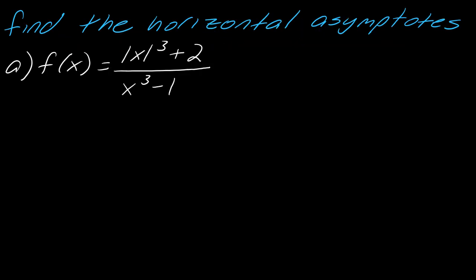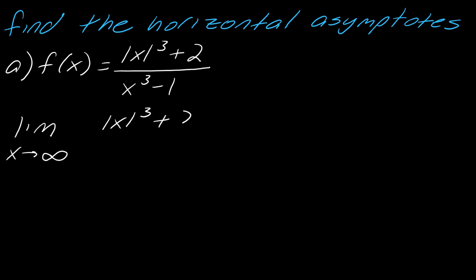This can play out in a lot of different ways, so I wanted to show you how you might work through these. The question here would be: find the horizontal asymptotes. What that's basically asking you to do is take the limit as x approaches infinity. So let's start with the limit as x approaches positive infinity. This is going to be different for every limit that we look at.